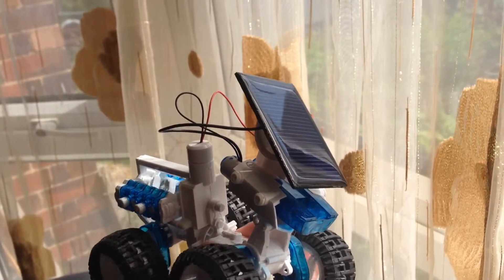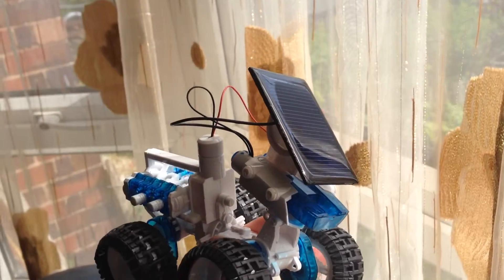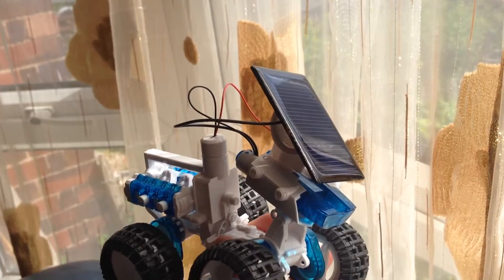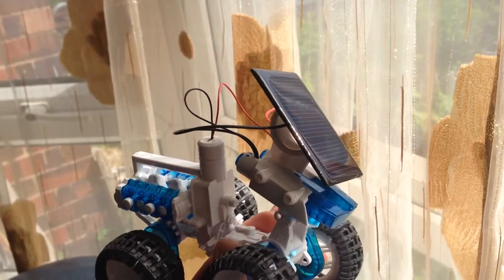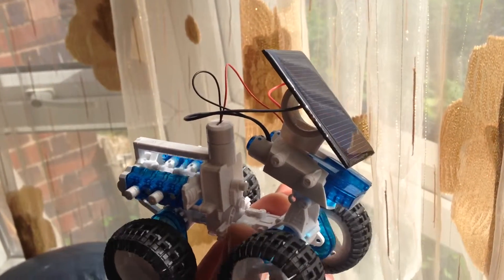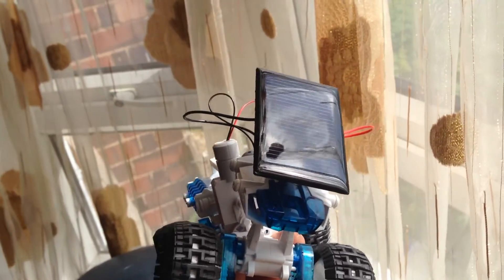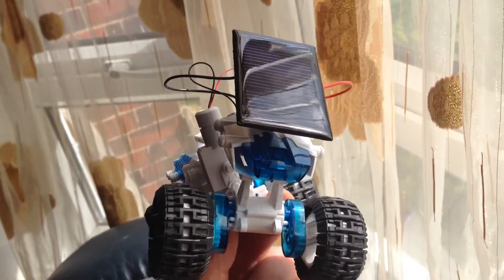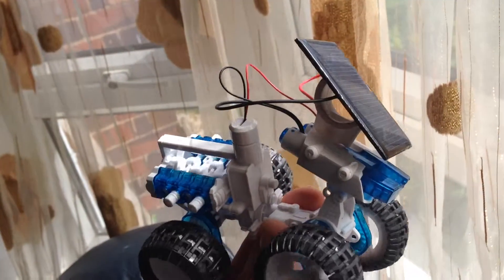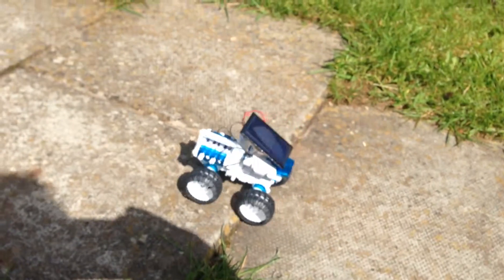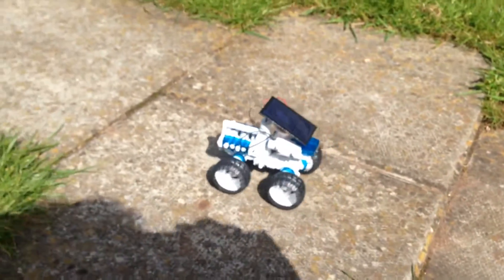Like I say, little solar panel off Amazon for about five pounds, 1.5 volt 250 milliamp, roughly what the motor is. And it's just running off that. Brilliant! There it is running off the sunlight.